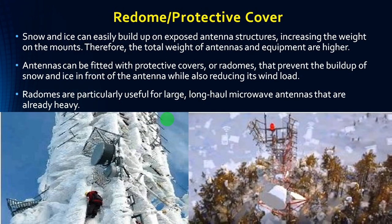Radome and protective cover: snow and ice can easily build up on exposed antenna structures, which increases the weight of the antenna mount, making the total weight of the antenna and equipment higher. Antennas can be fitted with protective covers that prevent the build-up of snow or ice in front of the antenna while also reducing wind load. Radomes are particularly useful for large and long-haul microwave antennas that are already heavy. These are the protective covers or radomes used to protect the microwave antenna against fog and ice formation.